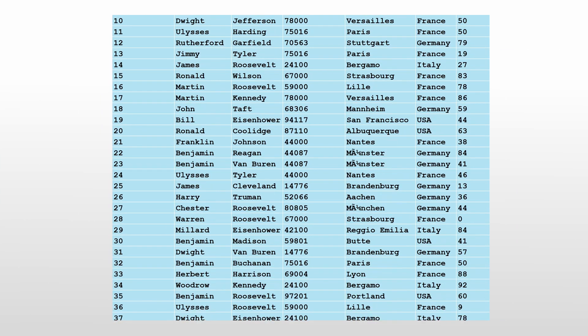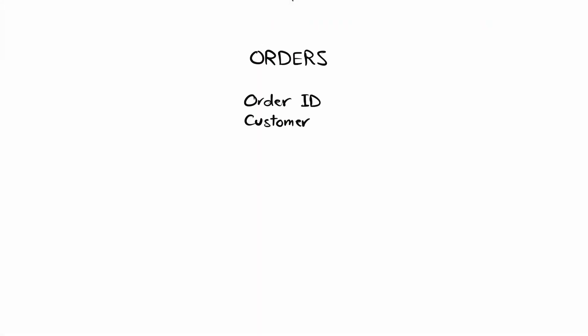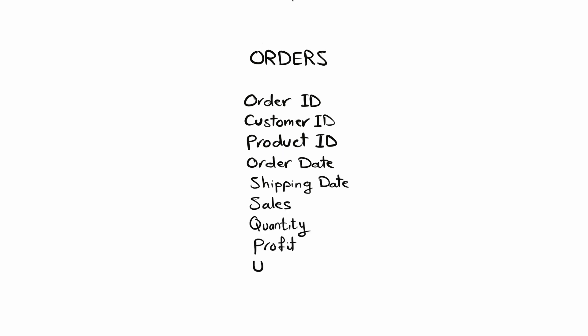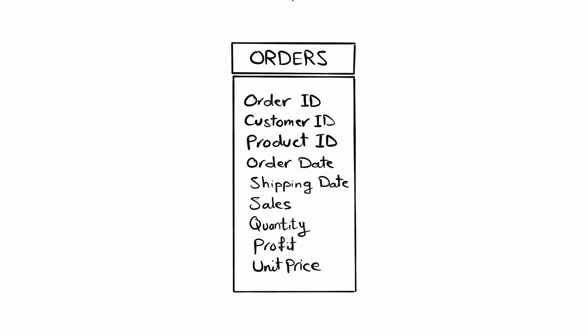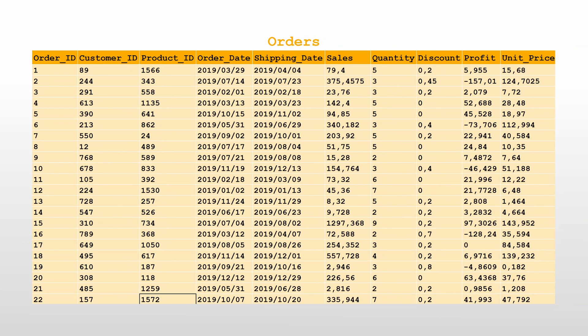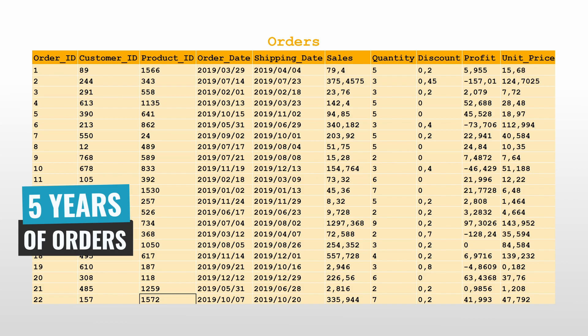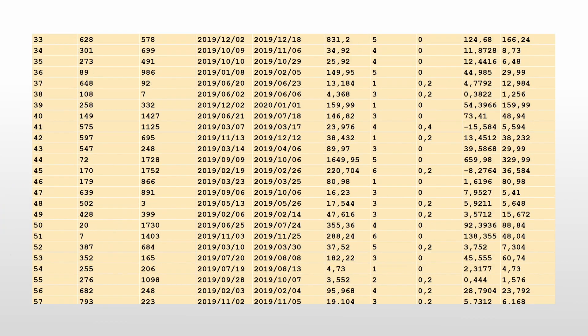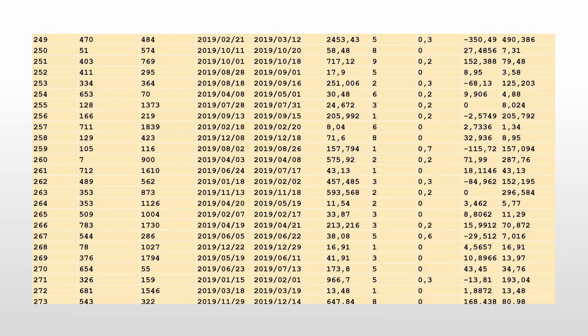The second table in our data model is the Orders table. It contains all the orders placed by customers, with information like order date, sales, quantity, and profits. In the small dataset we have 10 orders, and in the big dataset we have around five years of data, which is really helpful when we start building charts.